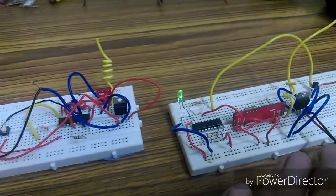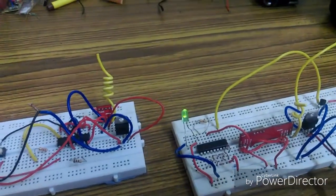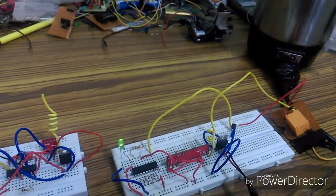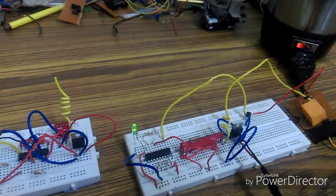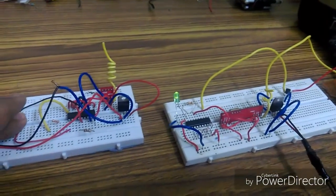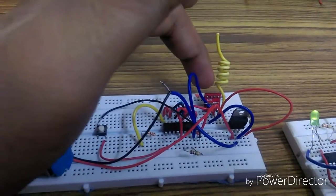When I press this button at the transmitter side, the kettle gets turned on. So let's look at the circuit and how it is working. This one is the RF transmitter that transmits data serially through this antenna.